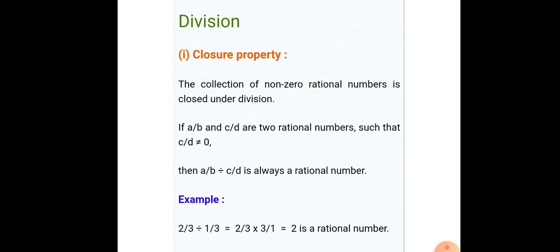Next is division. The closure property is also true for division, but under a condition: the divisor must not equal 0. If we divide a/b by c/d where c/d ≠ 0, the result is also a rational number. For example, 2/3 ÷ 1/3 gives 2, which is also a rational number.